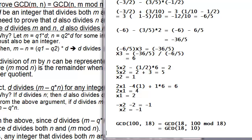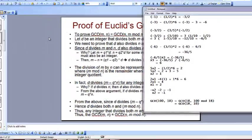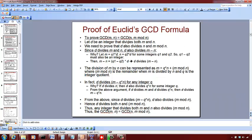So that's what we are trying to prove. Let D be an integer that divides both m and n. We need to prove that D also divides n and m mod n. As I said, anything that divides m and n should also be able to divide n and m mod n.